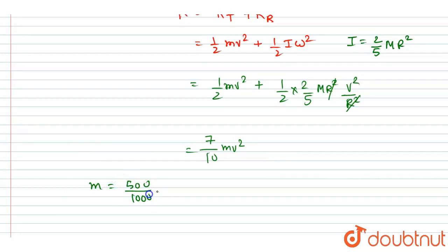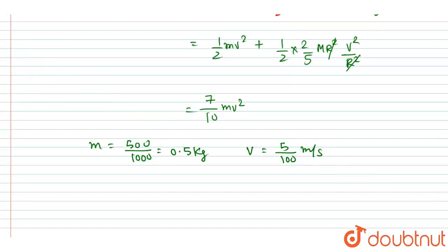...and the velocity is 0.05 meter per second. So if you convert them into kg, you will divide it with 1000, so it will be 0.5 kg. And the velocity will be 5 centimeters, so you will divide it by 100, and this much meter per second. So just put these values here and you will get the kinetic energy.